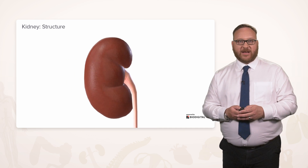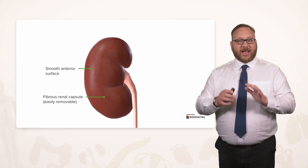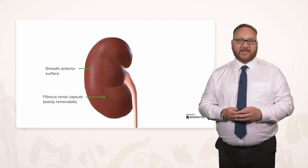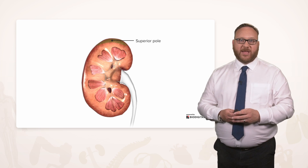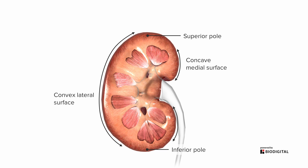Now let's look at the right kidney specifically. Here we have a smooth anterior surface, which is covered by an easily removable fibrous capsule. Part of that removal will also involve clearing the perinephric fat. In a coronal section through the kidney, we can see the lateral curved edge on the left side of the screen. On the medial surface, it is indented. At the top we have a superior pole and an inferior pole at the bottom. We have a large convex lateral surface and a concave medial surface indented with the renal sinus. The renal hilum is where blood vessels pass into and leave the kidney, and the ureter also occupies this space. The renal sinus is just a space often filled with perinephric fat.